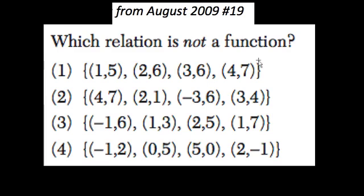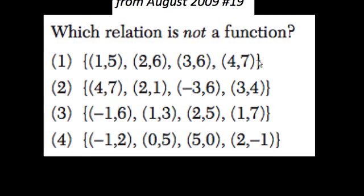Here we want to know which relation is not a function. In other words, the points in each choice here, the ordered pairs, they want to know which of them has a relationship between the input and output, that's the x and y, that represents a function.